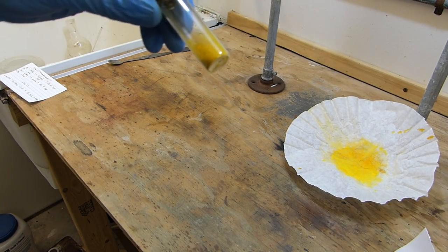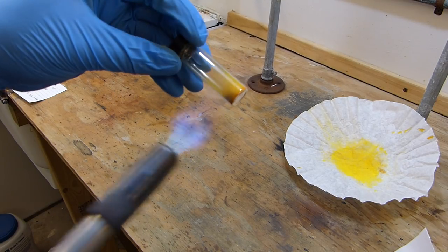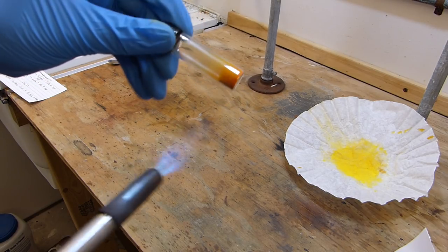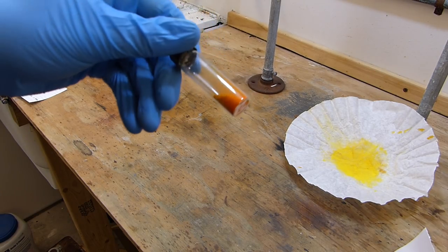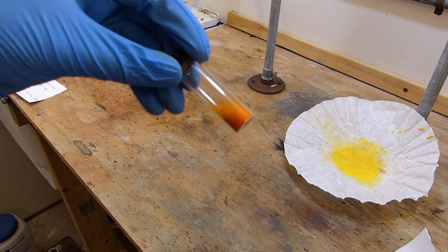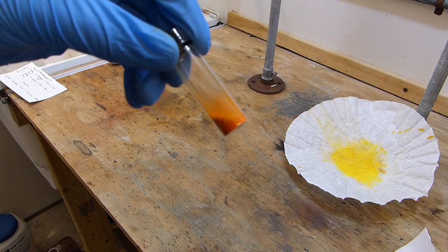We can do the same thing with this little vial here. It's bright yellow. I'll just play the torch flame on it very carefully and you can see it's turning orange already. A little bit more heat, continuing to go orange, a little bit more, and it's almost completely bright orange now.